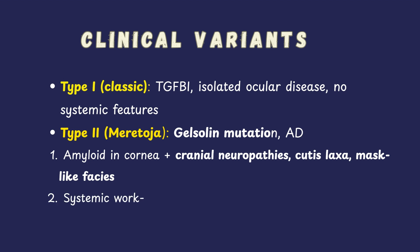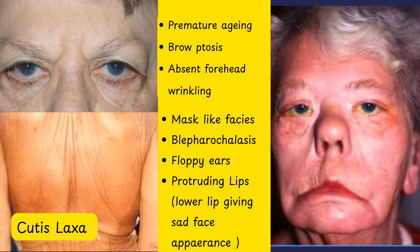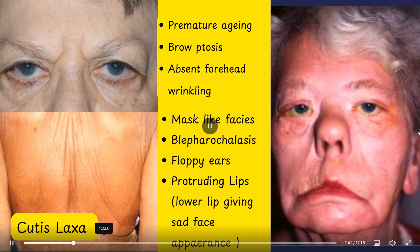Type 2, on the other hand, is associated with a different mutation known as the gelsolin mutation. Unlike Type 1, it has systemic features in addition to corneal changes. Patients with Type 2 may develop cranial neuropathies, facial paralysis, and characteristic facial features including premature aging, reduced forehead wrinkling, mask-like faces, floppy ears, protruding lower lip, cutis laxa (loose skin), and blepharochalasis (redundant loose eyelid skin).